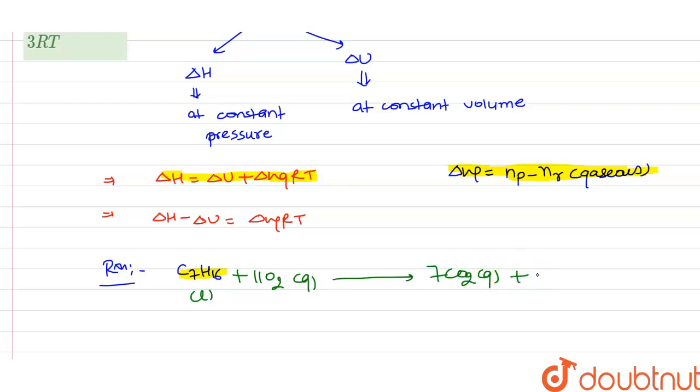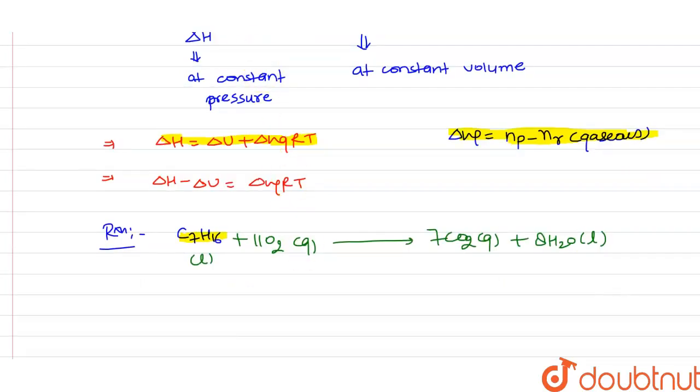Now we have to find the value of delta ng first. So in this case, the delta ng will be what? 7 minus 11. On solving it, we get minus 4.